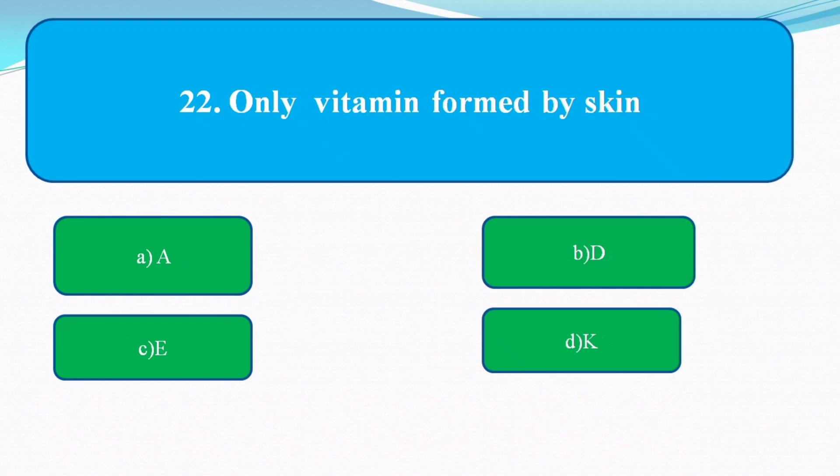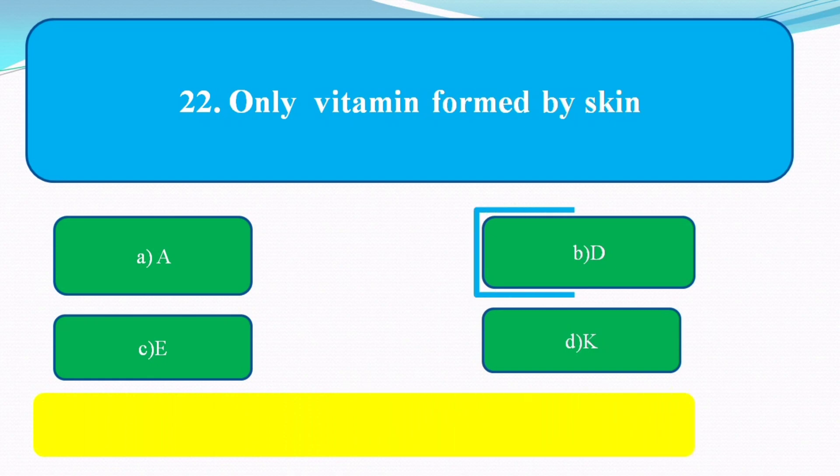The only vitamin formed by the skin is? The options are: A, D, E, K. The answer is Vitamin D, as the skin produces hormonal Vitamin D.